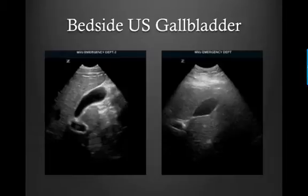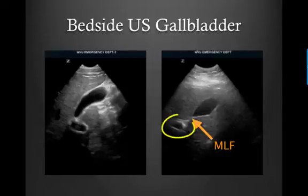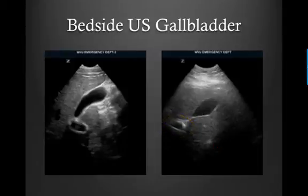Here are a few images of normal gallbladders. We can see the median lobar fissure connecting to the portal triad, which lets us know we are definitely looking at the gallbladder. The walls look nice and thin, and again you're going to measure the anterior wall. There's no evidence of sludge or stone, and there's no pericholecystic fluid.